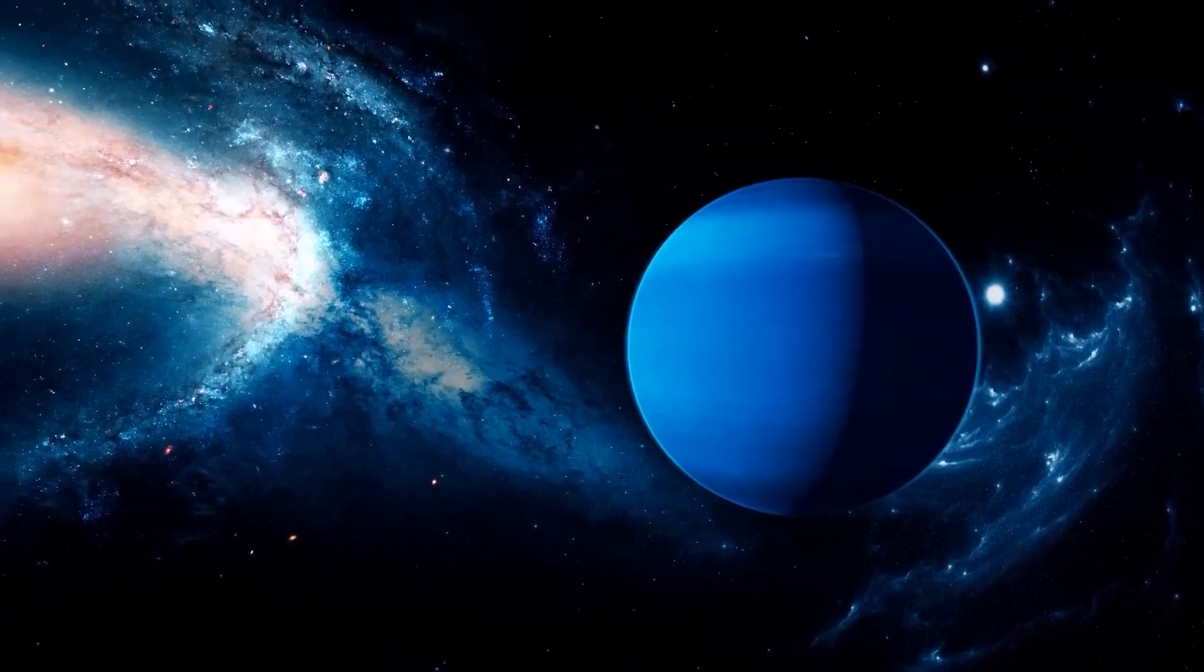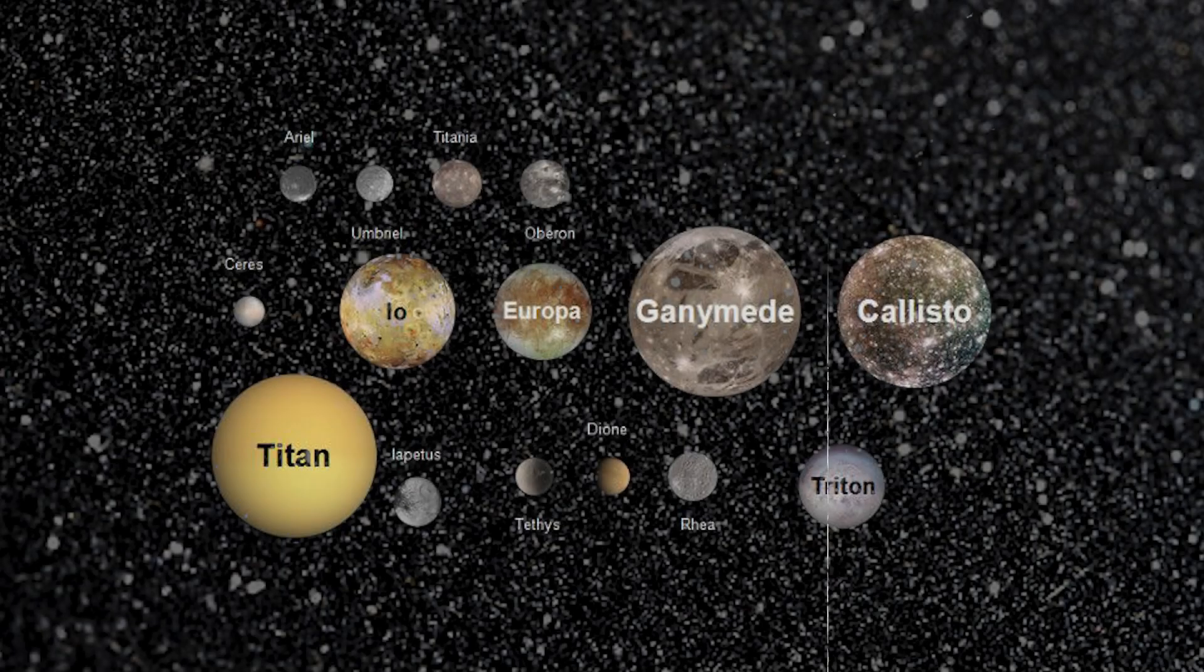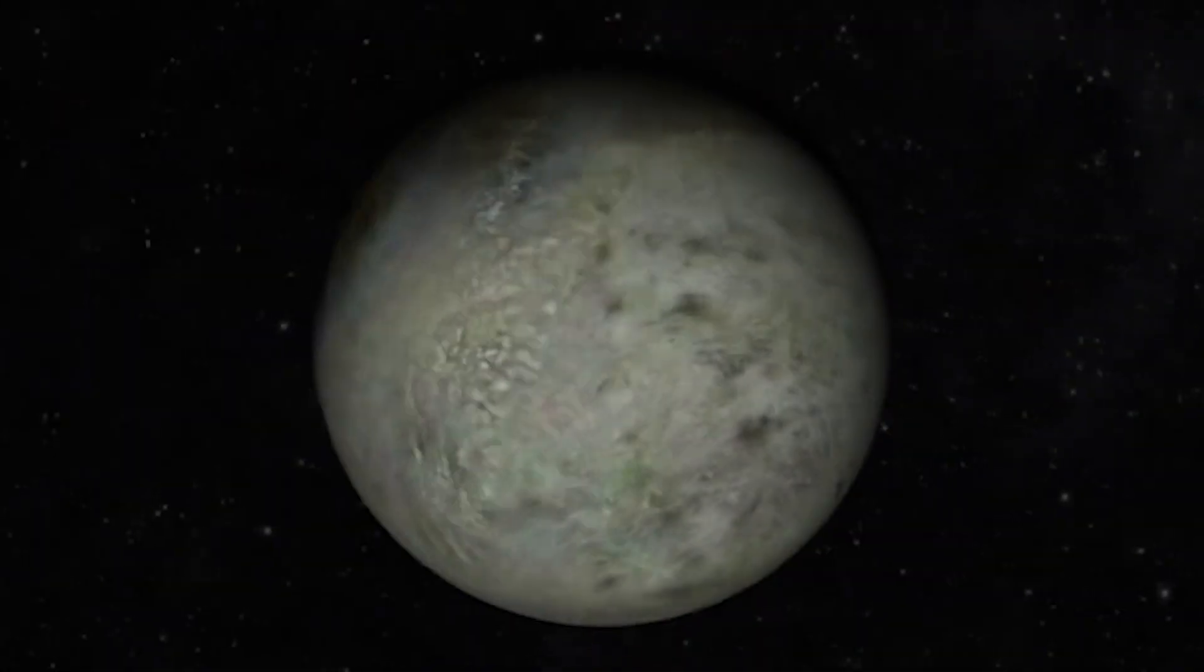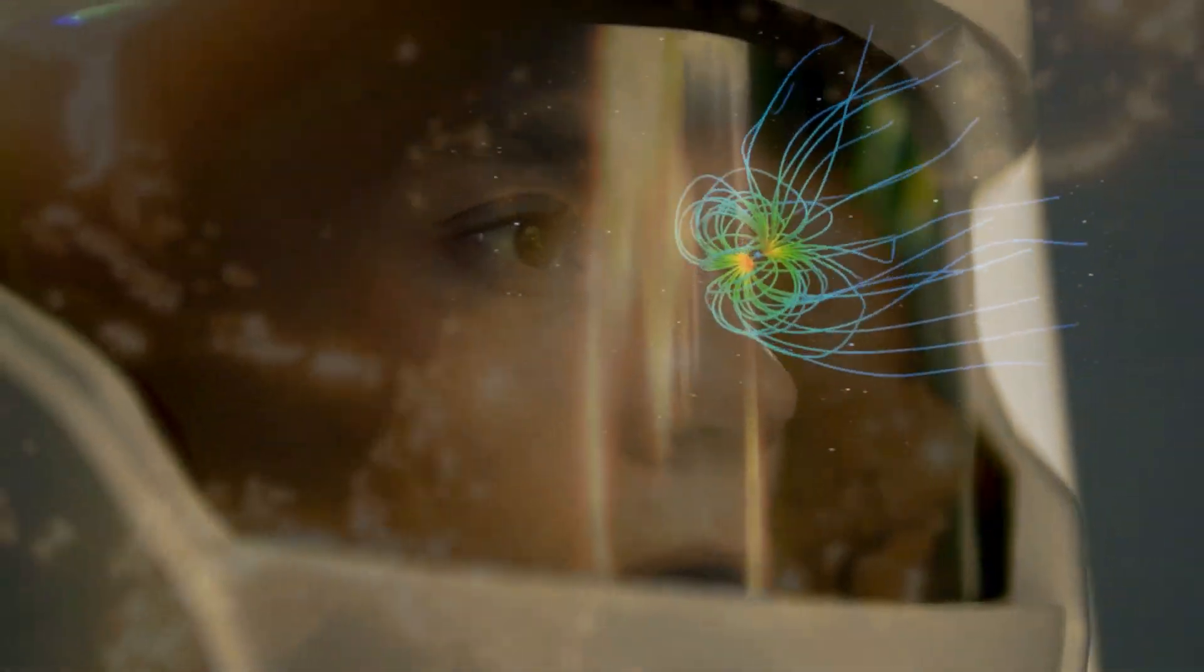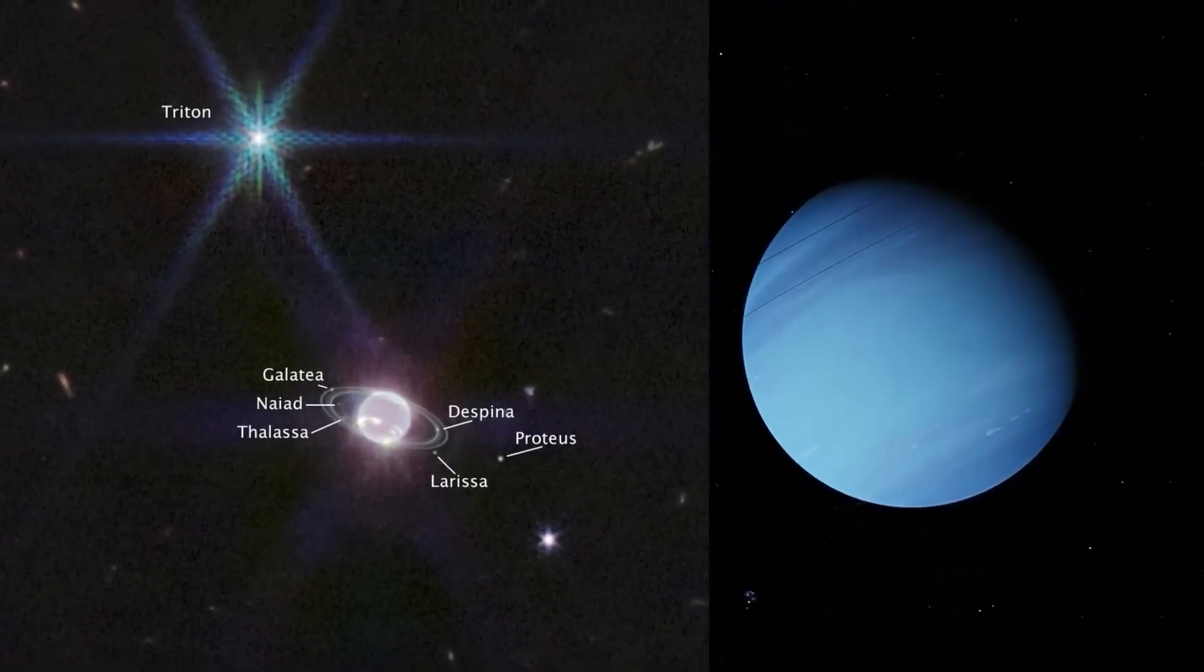Despite these obstacles, Neptune has a unique atmosphere, with 14 intriguing moons like Triton, remarkable rings and a magnetosphere, all of which scientists are eager to study further. Neptune has 14 known moons.